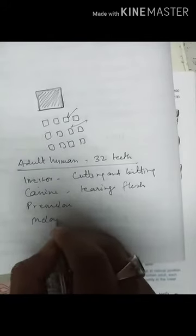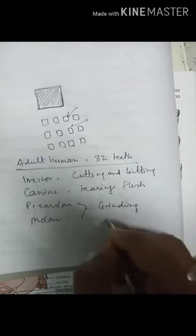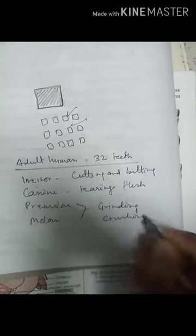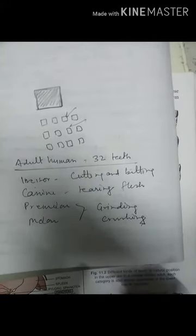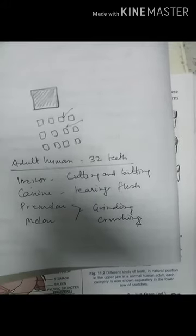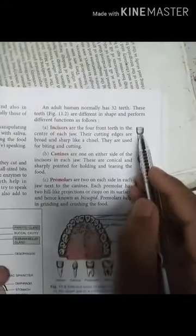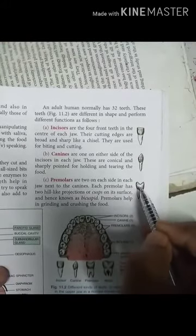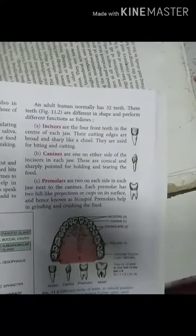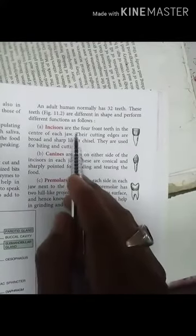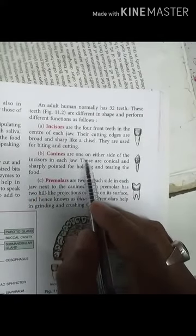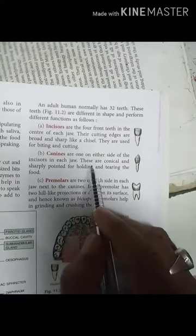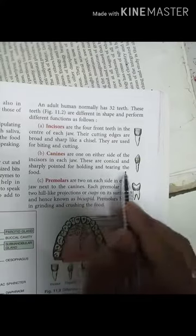And premolars and molars are grinding or crushing teeth. They crush the food into very small particles so that the food changes into a circular mass called bolus. Incisors are the four front teeth in the center of each jaw. The cutting edge is broad and soft like a chisel. They are used for biting and cutting. Canines are one on either side of the incisors in each jaw. These are conical and sharply pointed for holding and tearing the food.